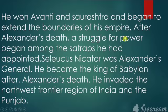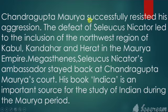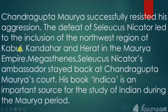After Alexander's death, a struggle for power began among the satraps he had appointed. Seleucus Nicator, Alexander's general, became the king of Babylon after Alexander's death and invaded the northwest frontier region of India and Punjab. Chandragupta Maurya successfully resisted his aggression. The defeat of Seleucus Nicator led to the inclusion of the northwest regions of Kabul, Kandahar, and Herat in the Maurya Empire.